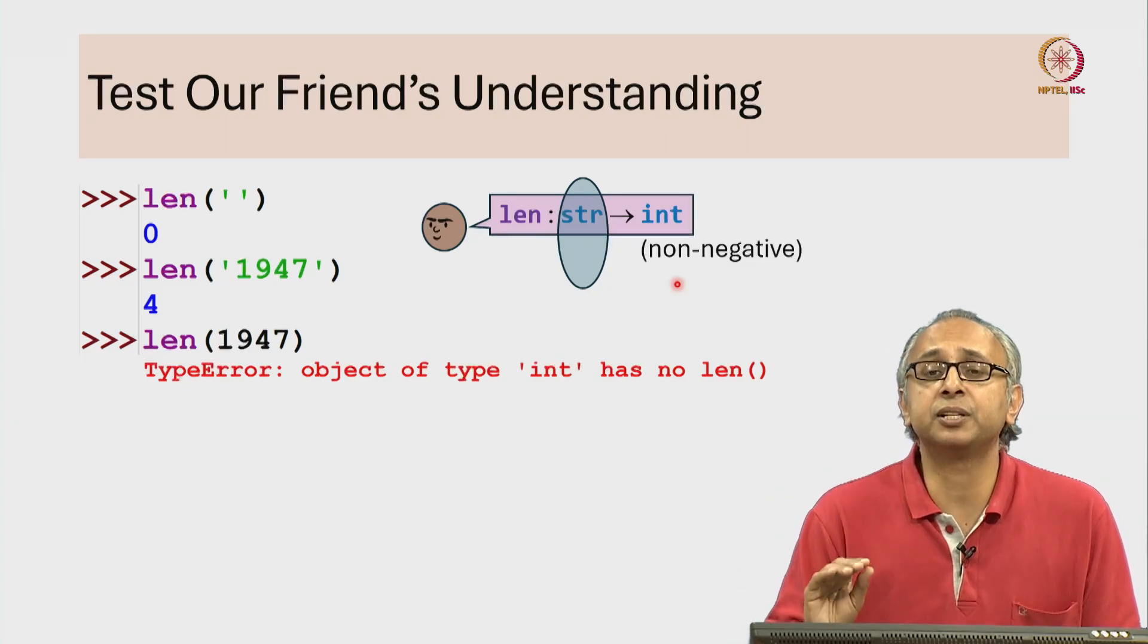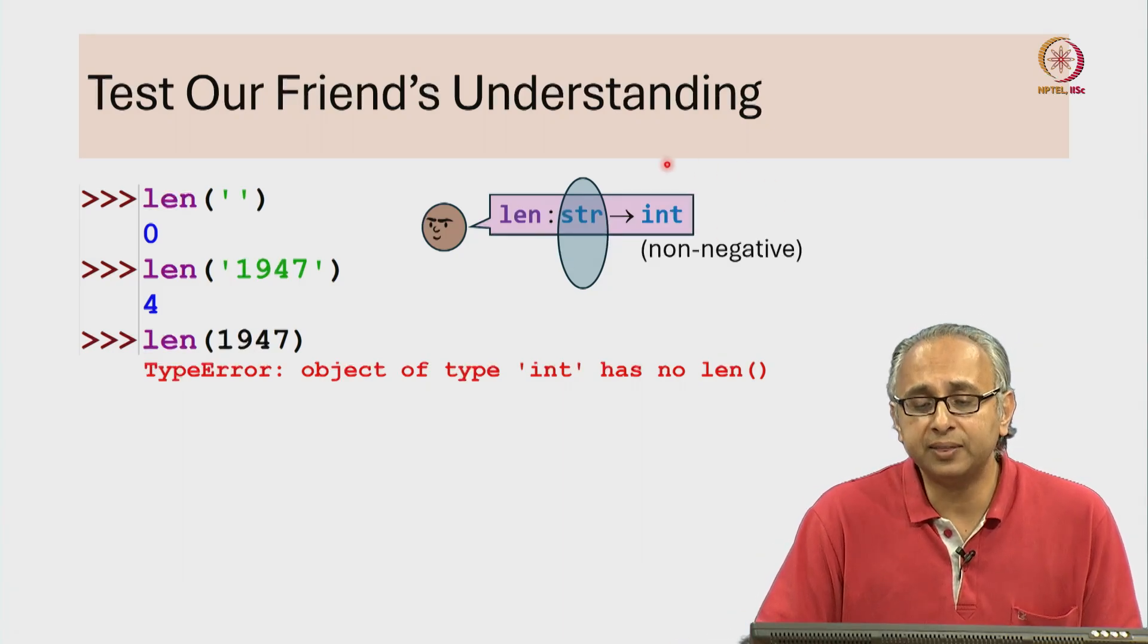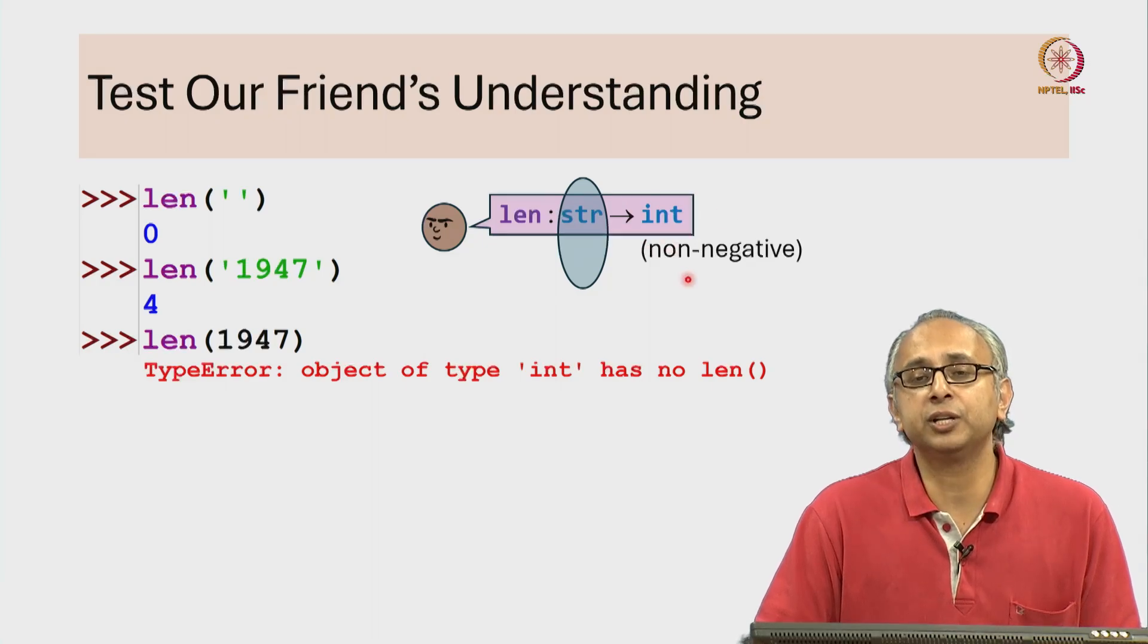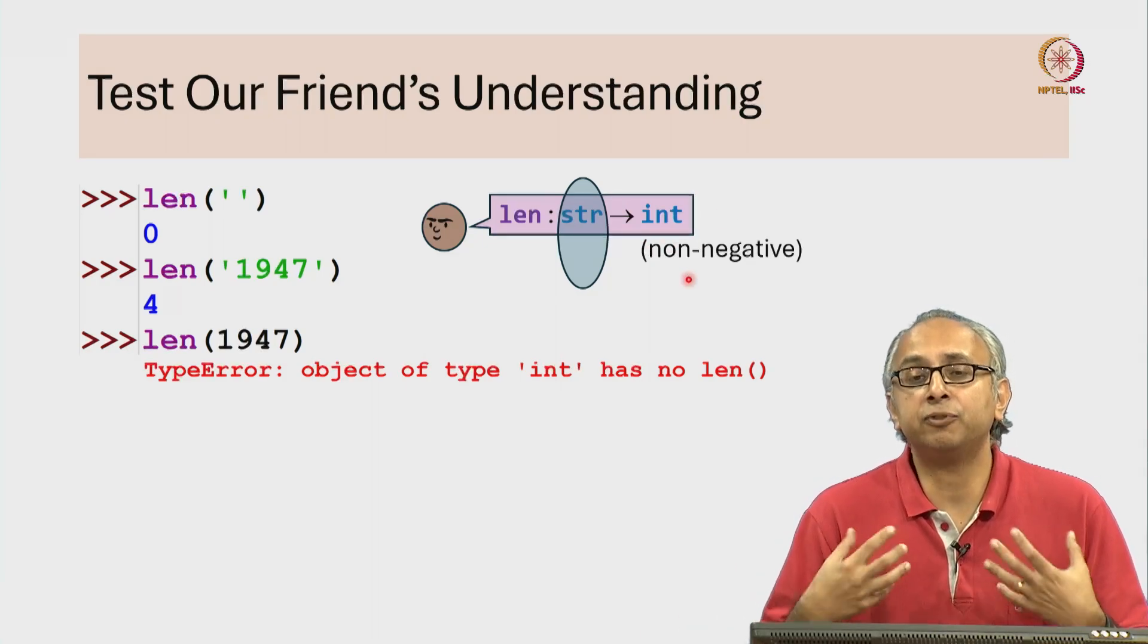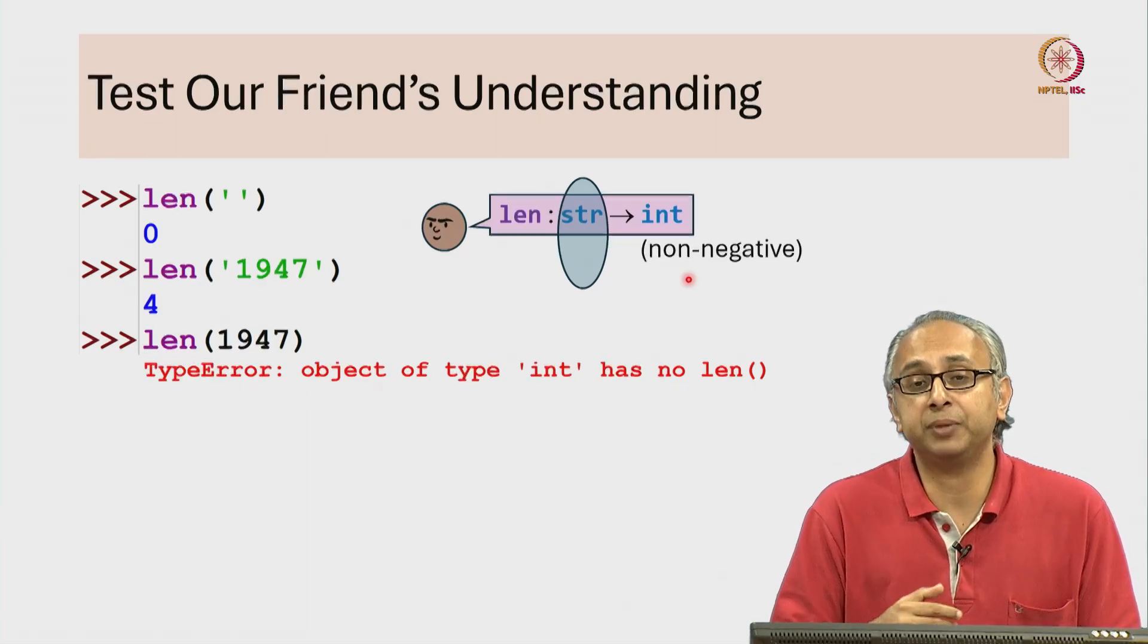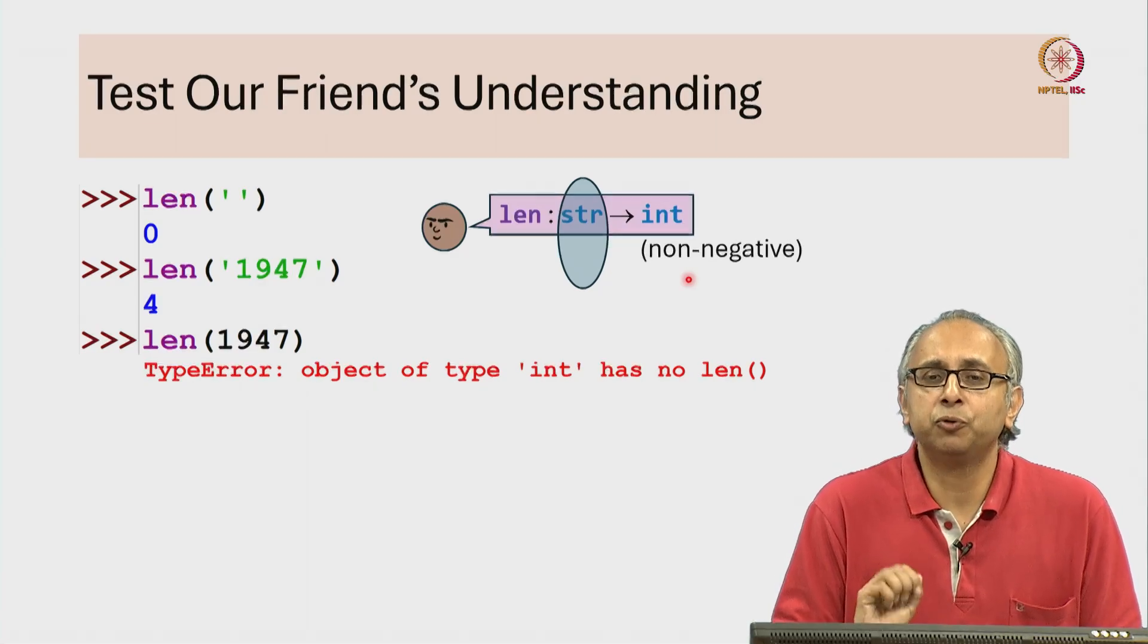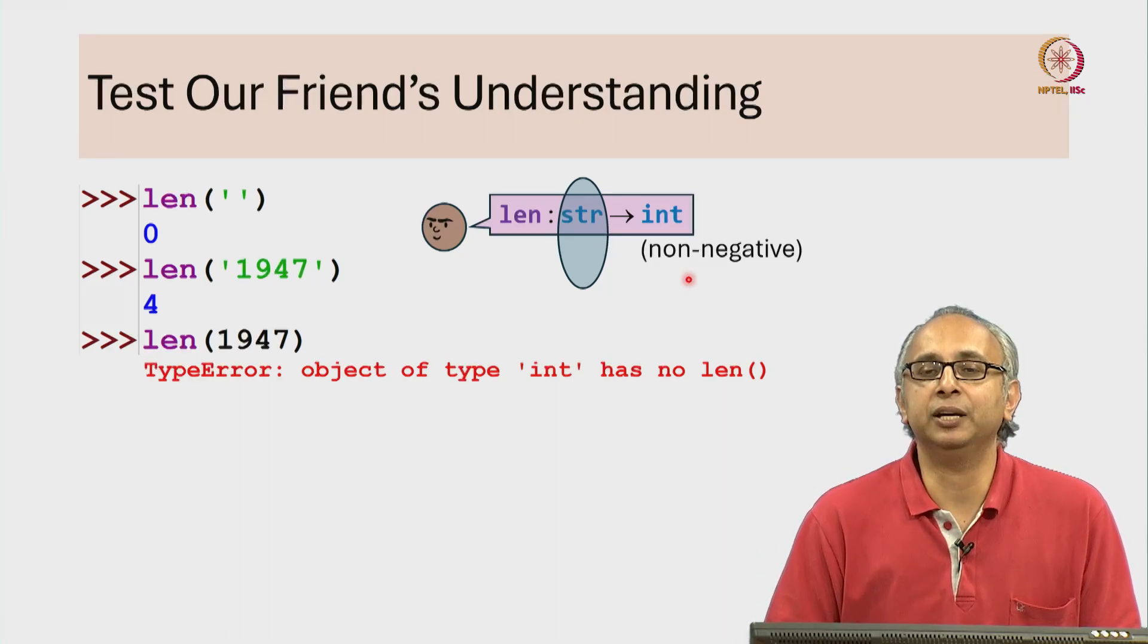Even so, it's not wrong for our friend to say that the output of the len function is an int. It's possible that the function never produces certain elements from the output set. So from that technical perspective, what our friend said is not actually wrong.